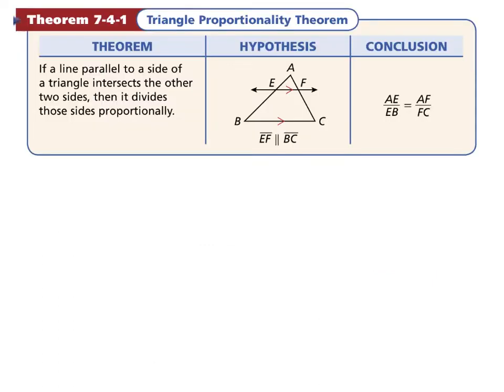The triangle proportionality theorem says this: If a line parallel to the side of a triangle intersects the other two sides, then it divides those sides proportionally.